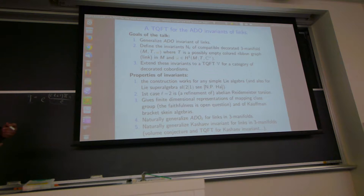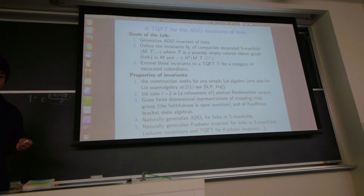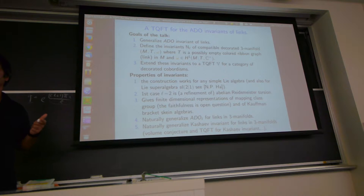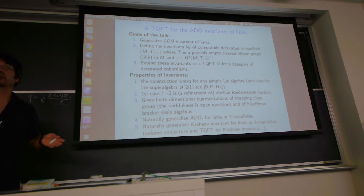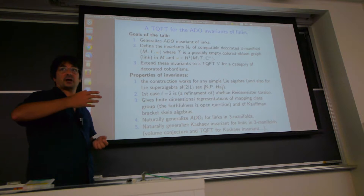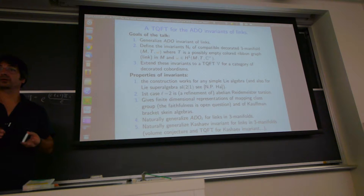It gives finite-dimensional representations of the mapping class group, and they are very different from the Witten-Reshetikhin-Turaev representations. In the WRT case, the image of the Dehn twists are finite-order elements, and the kernel contains subgroups generated by powers of Dehn twists. Here, the image of the Dehn twists are more like transvections, so we have no idea if there is an element in the kernel of this representation. This is important because it is not known if the mapping class group is a linear group.